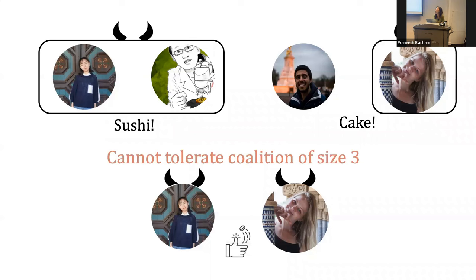This protocol relies on knowing who the sushi people and cake people are — our whole protocol relies on that. So it's already public who wants what. And we're just trying, given that knowledge... obviously you can break the protocol if somebody could lie about that. Our assumption is that everyone's preferences are public.